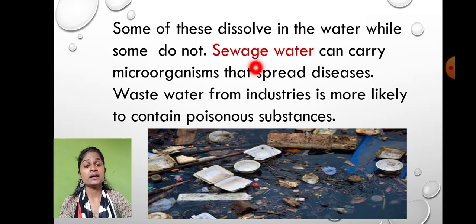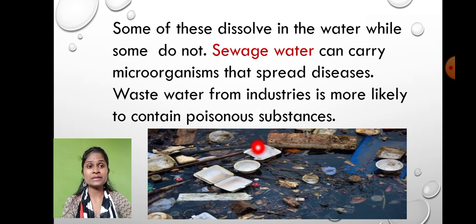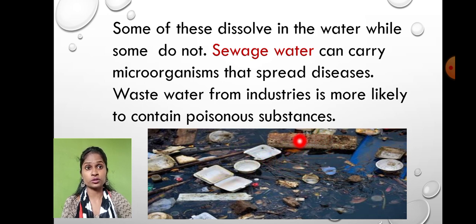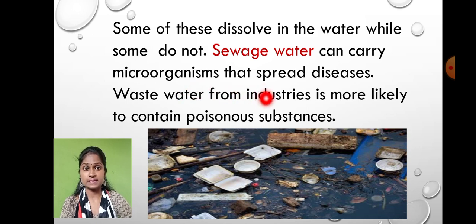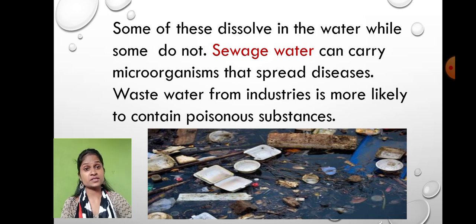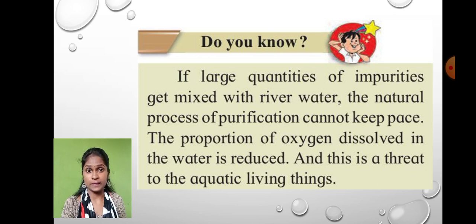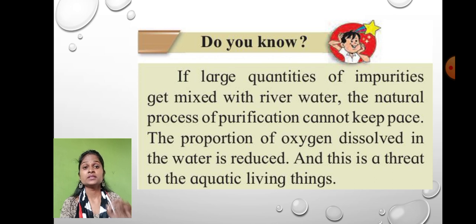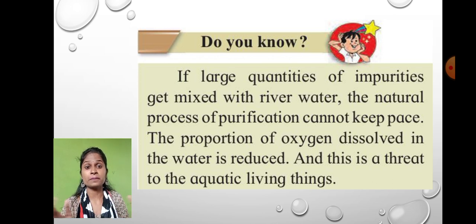Sewage water is collected from residential areas and factories and released into water bodies. This sewage waste contains soluble and insoluble particles, and the soluble things present in sewage water have microorganisms. These microorganisms are able to cause disease. That's why the water in sewage has a lot of poisonous substances, and water pollution causes a lot of damage to the aquatic organisms present in the water.